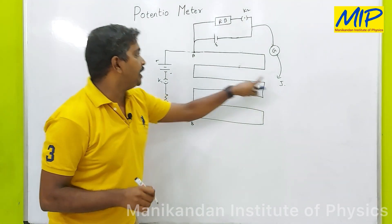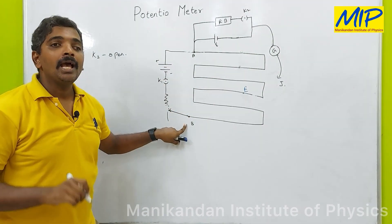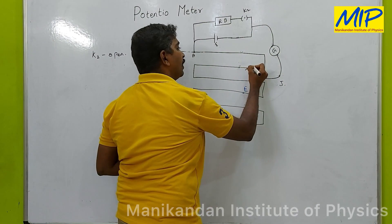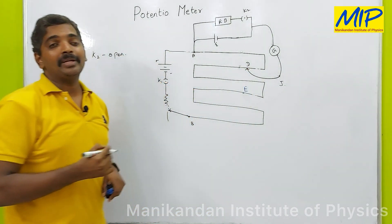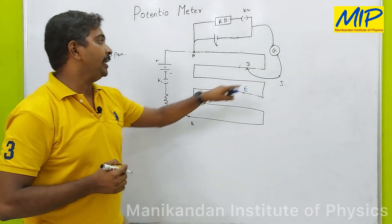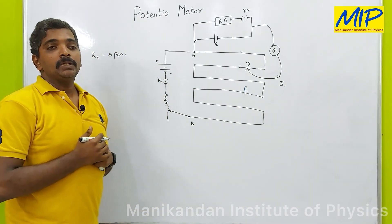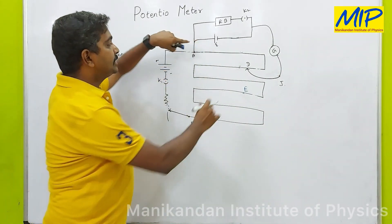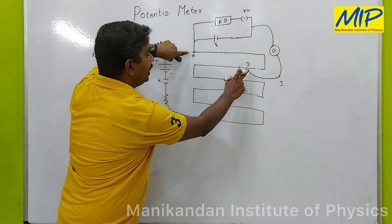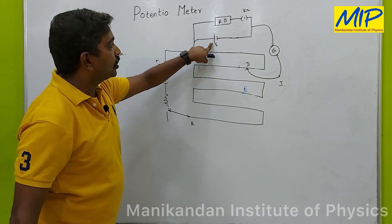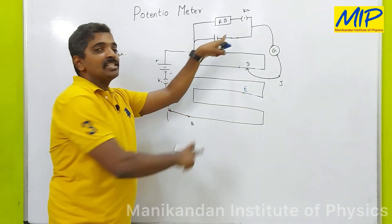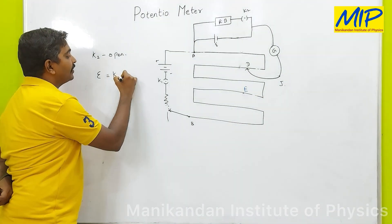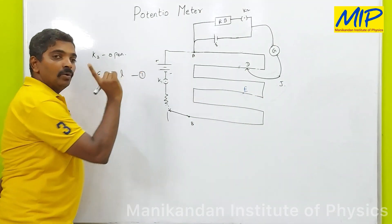When K2 is open, I slide the jockey between A and B. At a particular point D, I get zero deflection in the galvanometer. So the EMF of this cell is balanced by this length — the potential drop across AD is balanced by the EMF of the cell. Therefore: E = K × L1. This is equation 1.